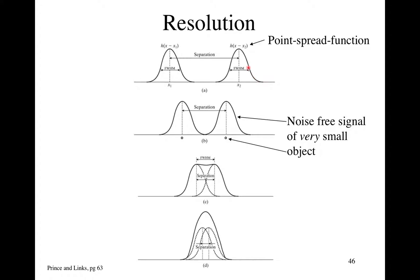If this width gets wider for different systems, that means it's a lower-resolution system — it blurs that signal into a broader spatial distribution. If it's really sharp and narrow, it's a high-resolution system. The Rayleigh criterion is developed by taking two of these dots, bringing them close together, and asking when you can no longer perceive that you have two dots and see just one signal — that's another definition of spatial resolution.